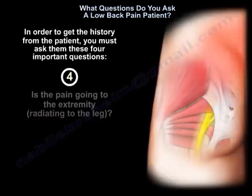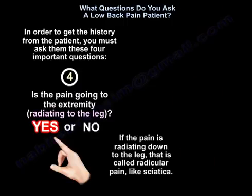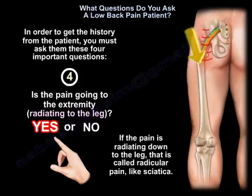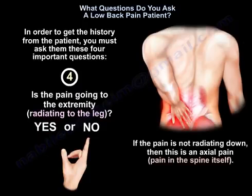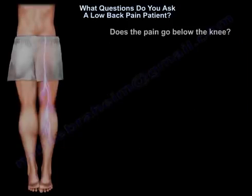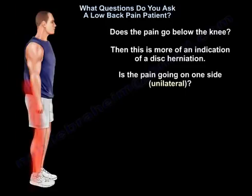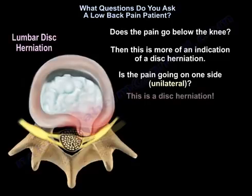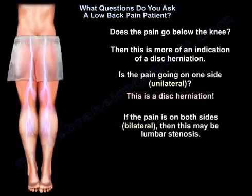The fourth question is whether the pain radiates to the extremity — is it going down to the leg or not? If the pain radiates down to the leg, that is called radicular pain, like sciatica. If it is not radiating down, that is axial pain — pain in the spine itself. Does the pain go below the knee? That is more indicative of a disc herniation. If the pain is on one side, unilateral, that suggests a disc herniation. If it is bilateral — both sides — that may be lumbar stenosis.